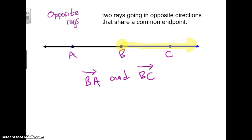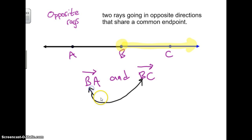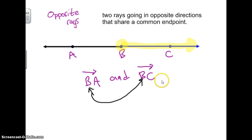So, ray BA and ray BC are opposite rays. What you're always going to find is that this first letter in a pair of opposite rays should always be the same, because those rays are going to be originating at the same place — or otherwise stated, they're going to have the same endpoints.